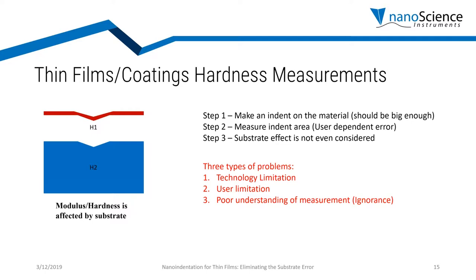The second error is user limitation. Because we are measuring the area of the indent, ten different users will measure these areas in ten different ways, leading to inconsistencies in your data that we want to avoid. The third part is a poor understanding of the measurement — not many people are aware of how much the substrate can influence the measurement of thin film properties. We want to be able to take care of that.